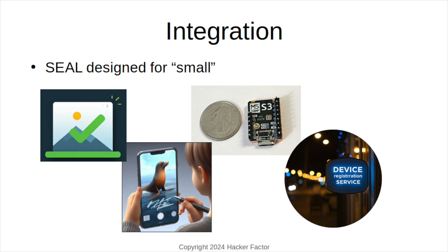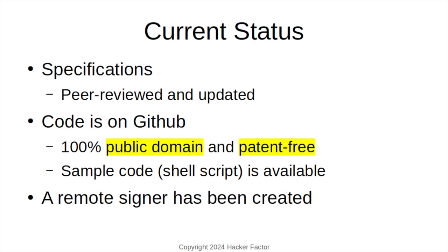SEAL could also be used with device registration services, so users can use other cameras or phones without worrying about impersonations from the next owner. As for the current status, the specifications for SEAL have been peer-reviewed and updated. The documentation is on GitHub along with some sample code. It is 100% public domain and patent-free, and the first remote signer has already been created.